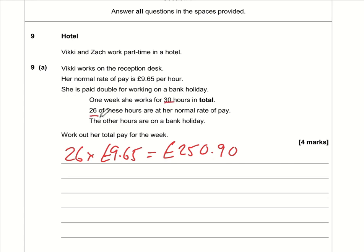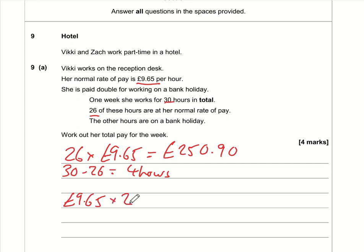She works 30 hours in total, so 30 minus 26 means she did 4 hours at the other rate — which is double pay. £9.65 multiplied by 2 is £19.30. Four hours at £19.30 comes to £77.20.